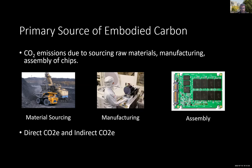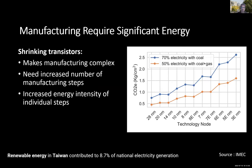Unfortunately, most semiconductor manufacturing and assembly happens in regions without access to renewable energy. For example, majority of storage is manufactured in Korea, which relies on natural gas and coal. So there are both direct carbon emissions from semiconductor manufacturing and indirect sources such as mining and refining metals.